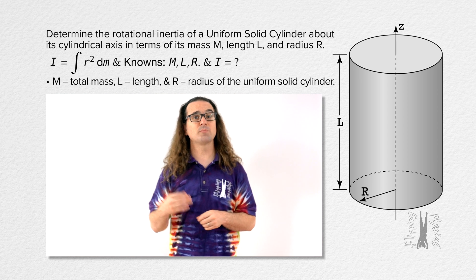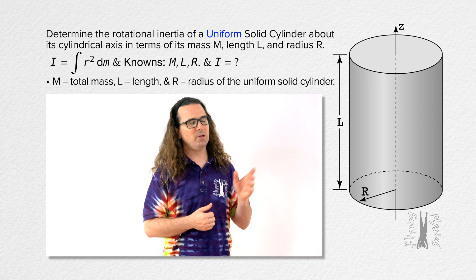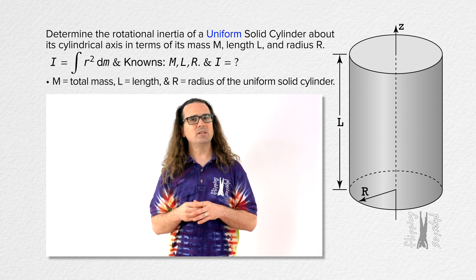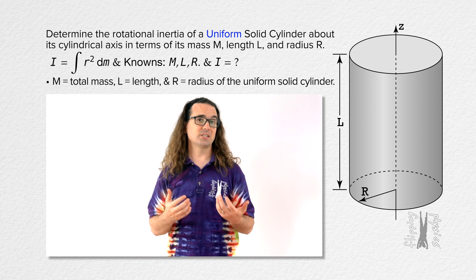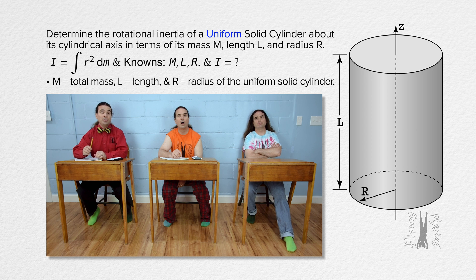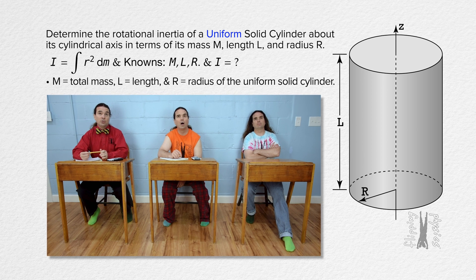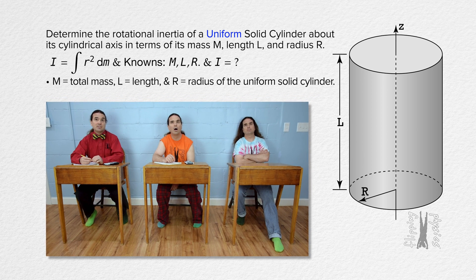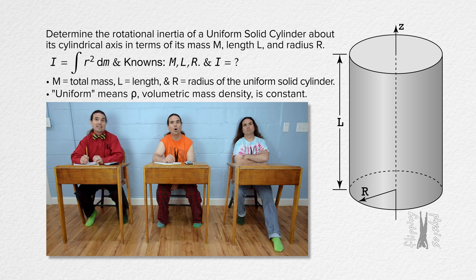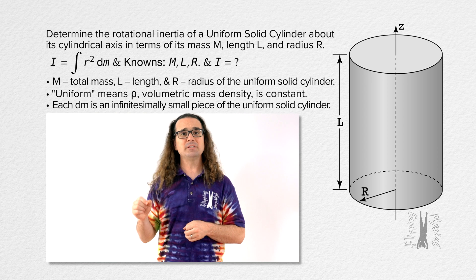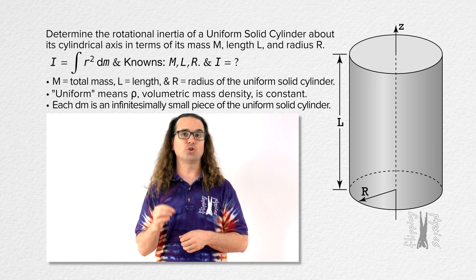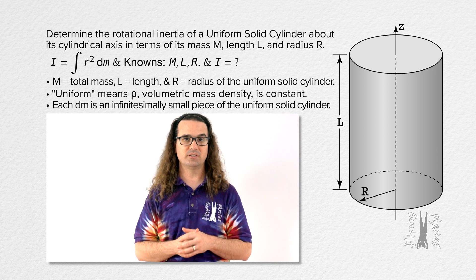We need to review what the term uniform means. What does the word uniform mean in uniform solid cylinder? The word uniform in uniform solid cylinder means the cylinder is of uniform volumetric mass density rho. Exactly.